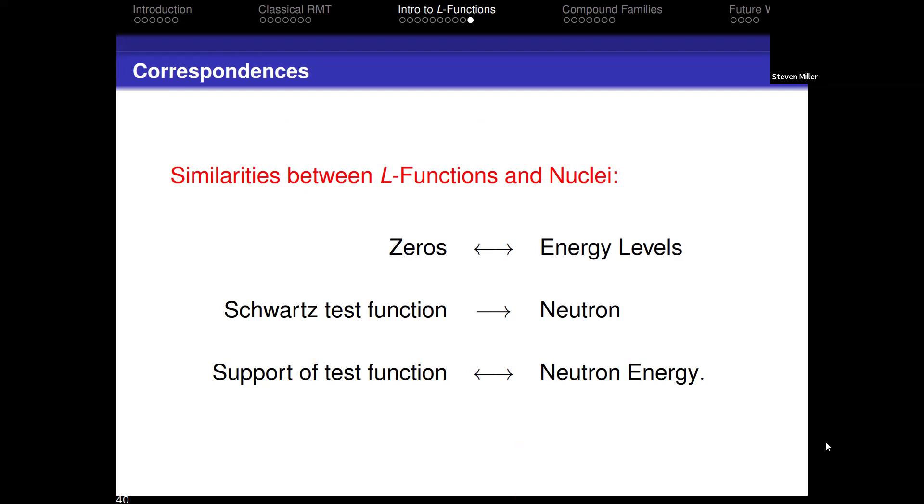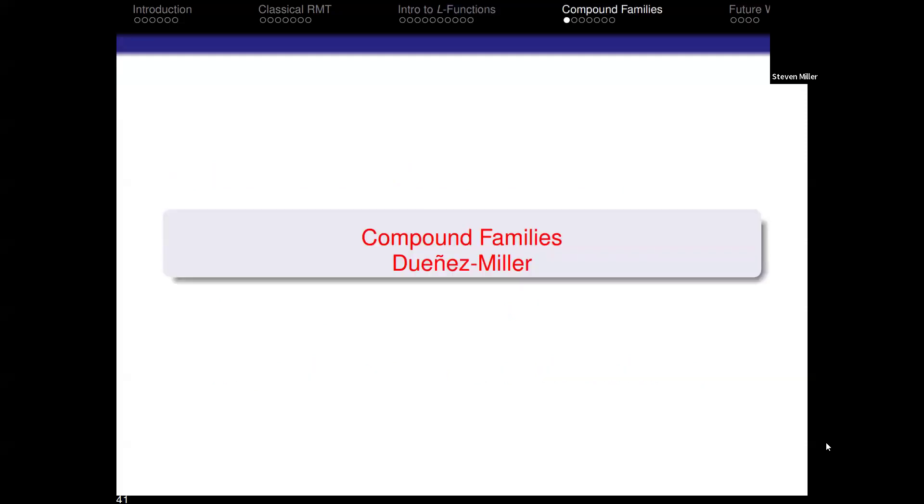The similarities, as I promised: in nuclear physics we have energy levels, in number theory we have zeros. In nuclear physics you shoot a neutron into the nucleus and you see what happens. We shoot a Schwartz test function. In nuclear physics you can only shoot neutrons with a given energy band. In number theory we can only shoot Schwartz test functions with a given support. If we are unable to calculate the number theory for an arbitrary test function, we don't have full information. We'd love to send in the delta spike. If we could send in the delta spike, we would know what's going on exactly at the central point. But the Fourier transform of the delta spike is the function that's identically one. We can't handle that. So these are the difficulties we have.